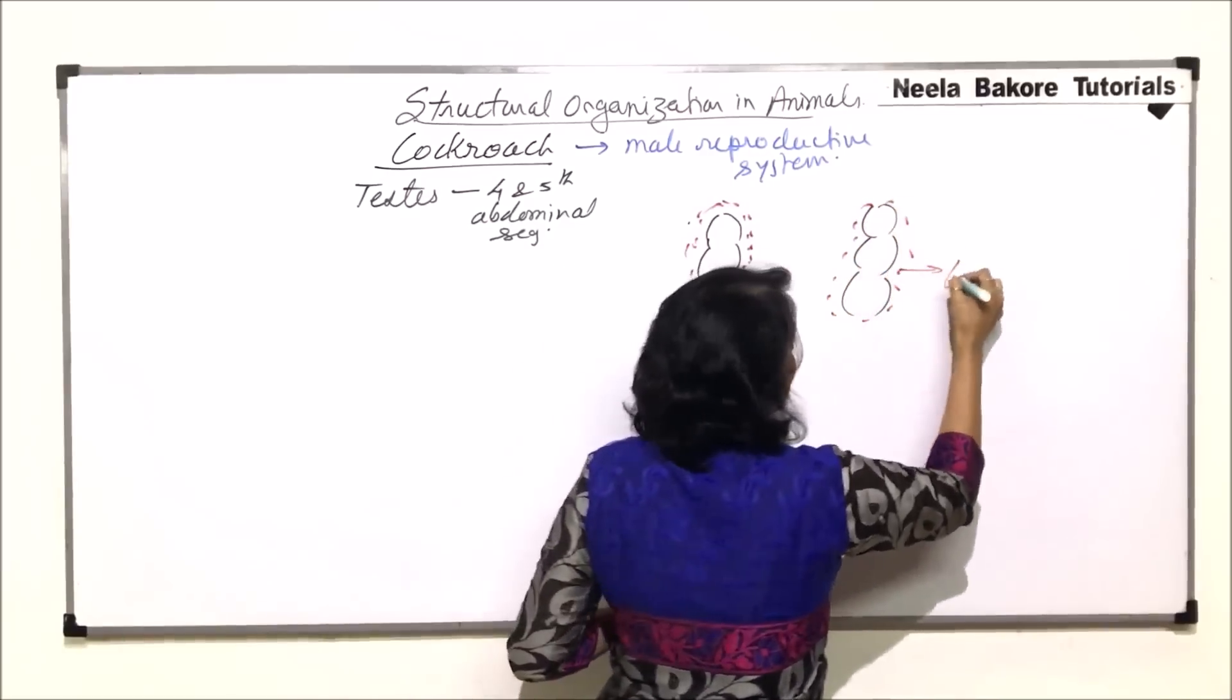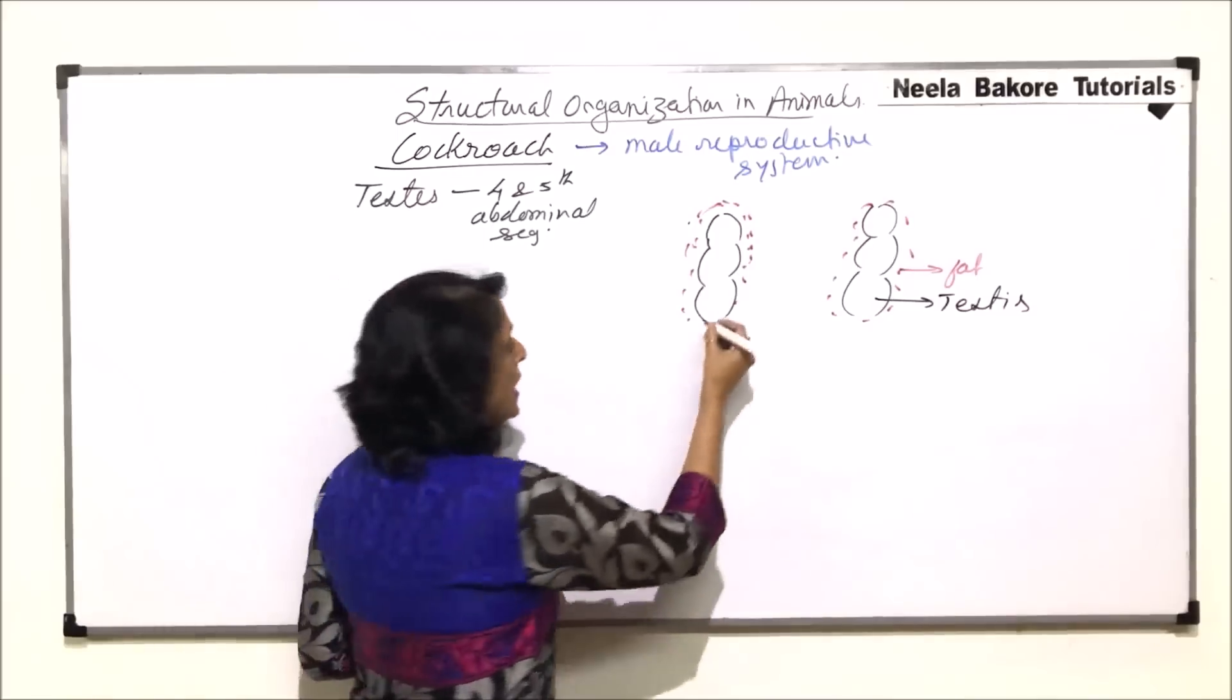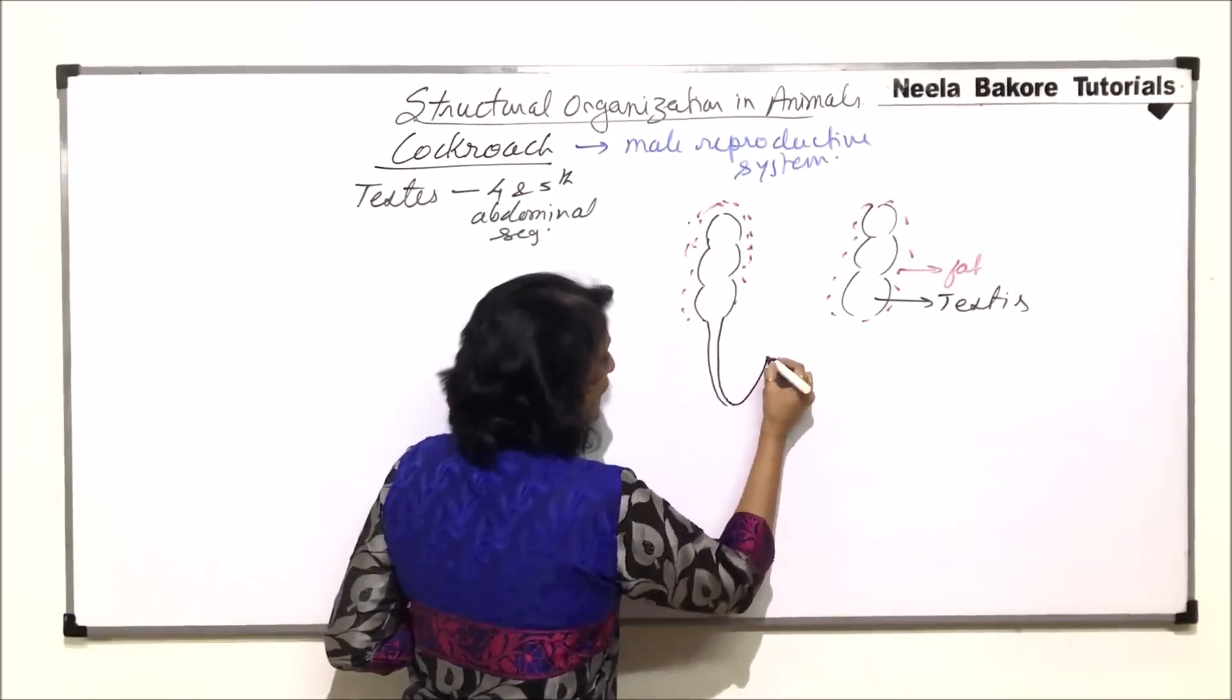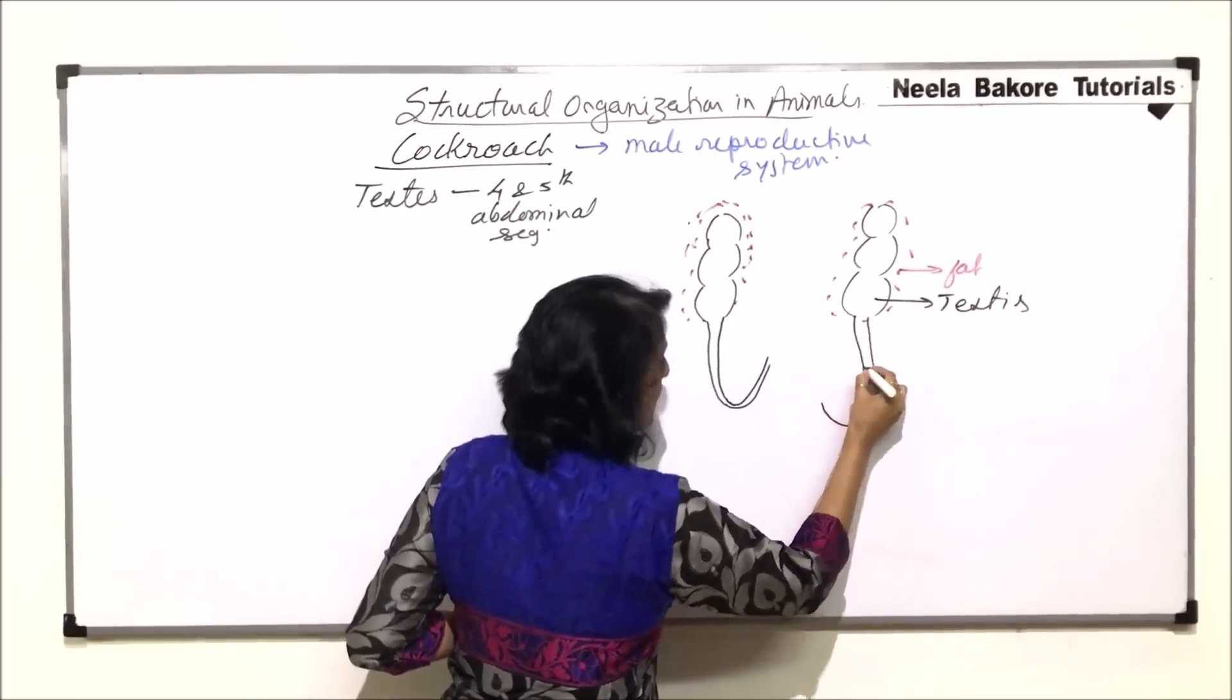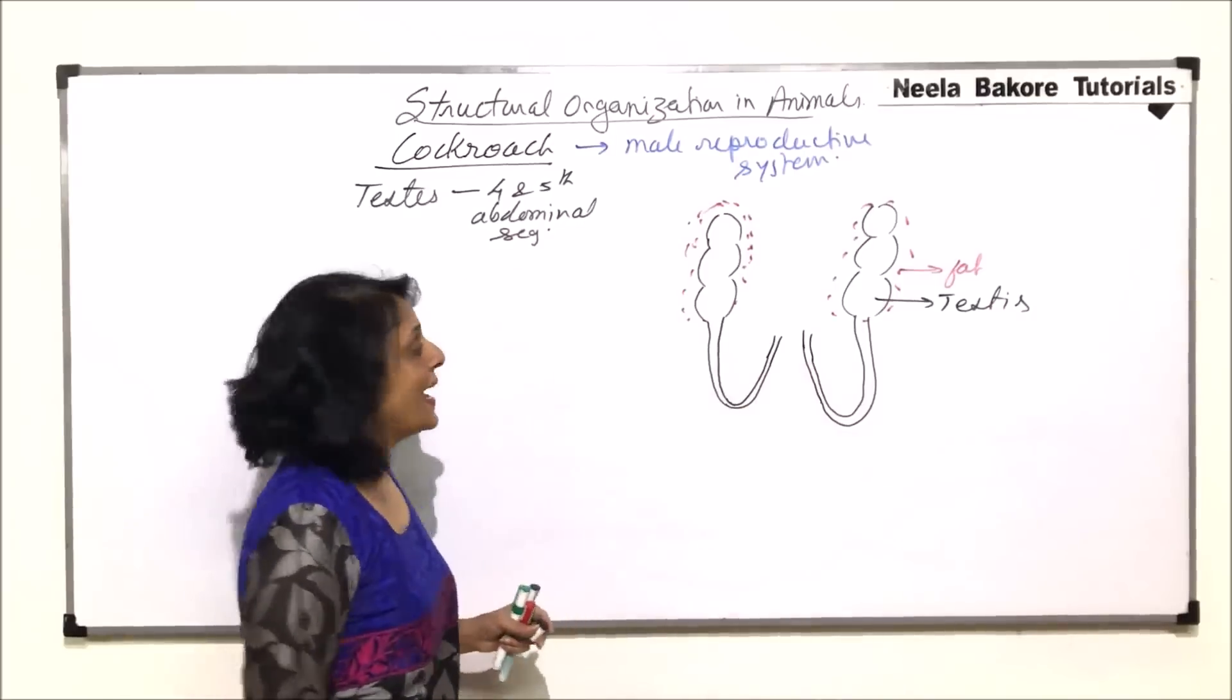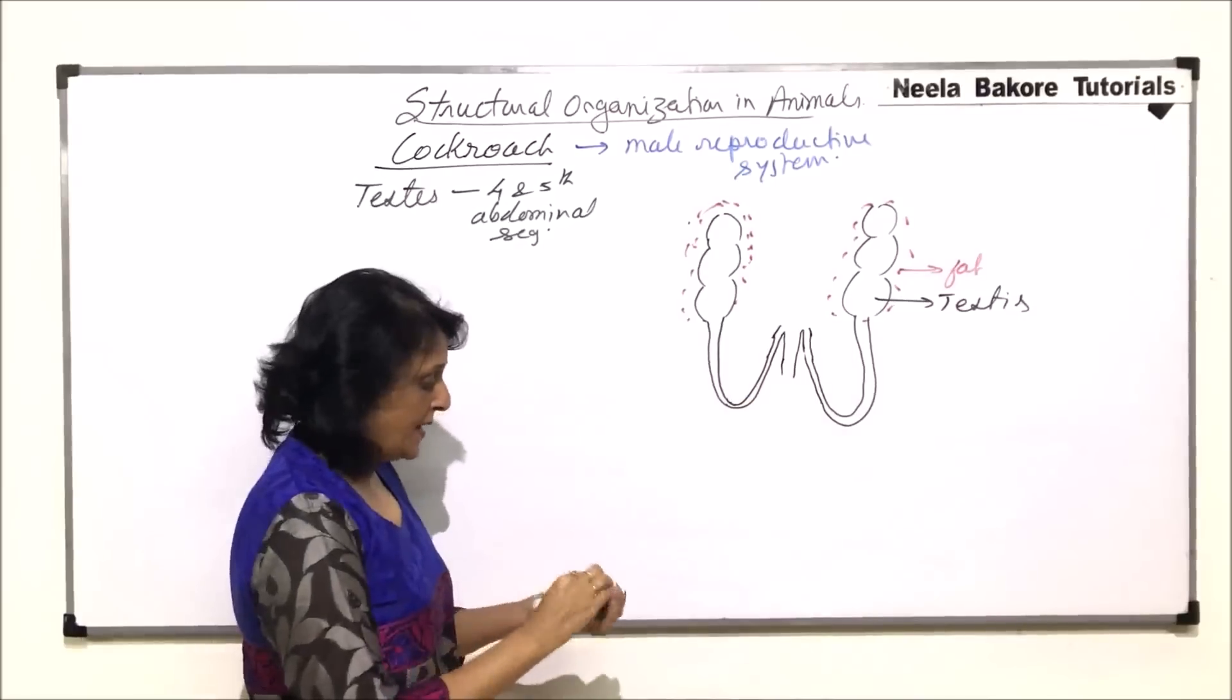So here this is all the fat which is there and the lobed testes. So this is one testes. Arising from each testes is a narrow tube-like structure which goes up to the last abdominal segment and these are known as the vasa deferentia. So from here also there would be a tube-like structure coming and these tubes would ascend.